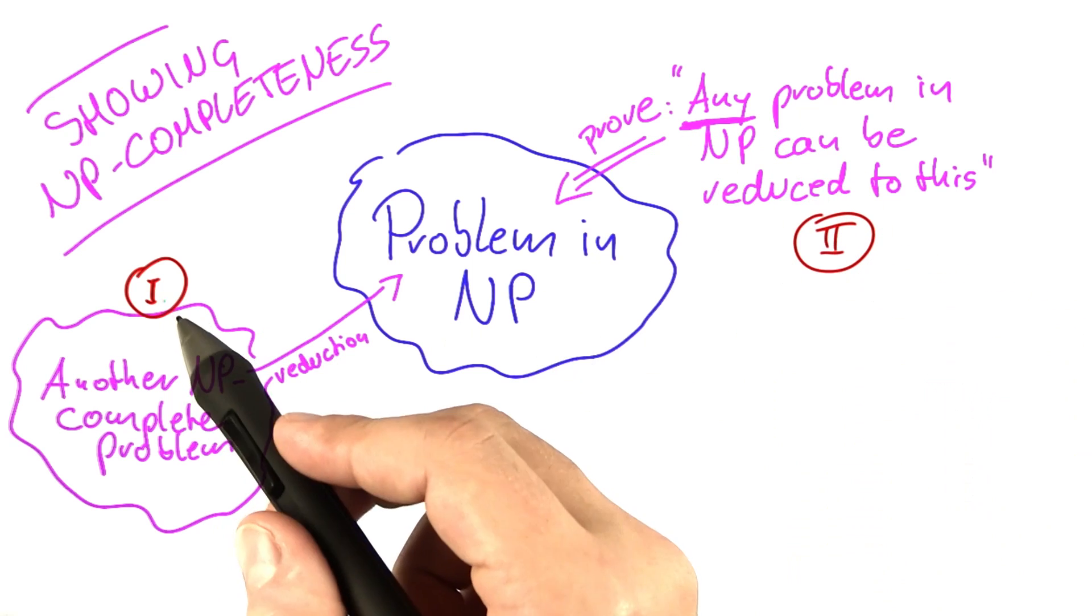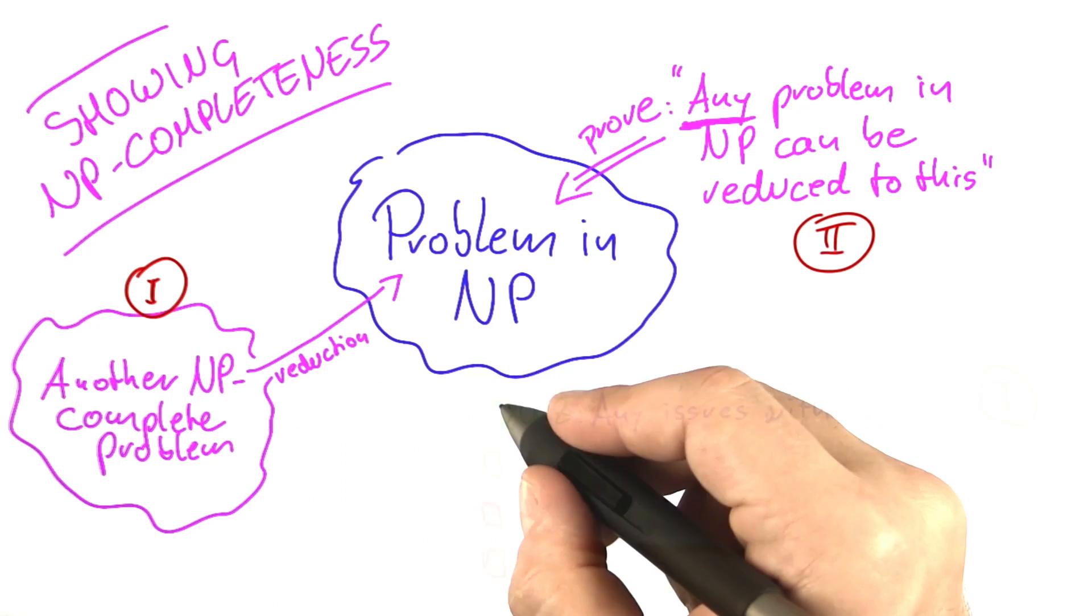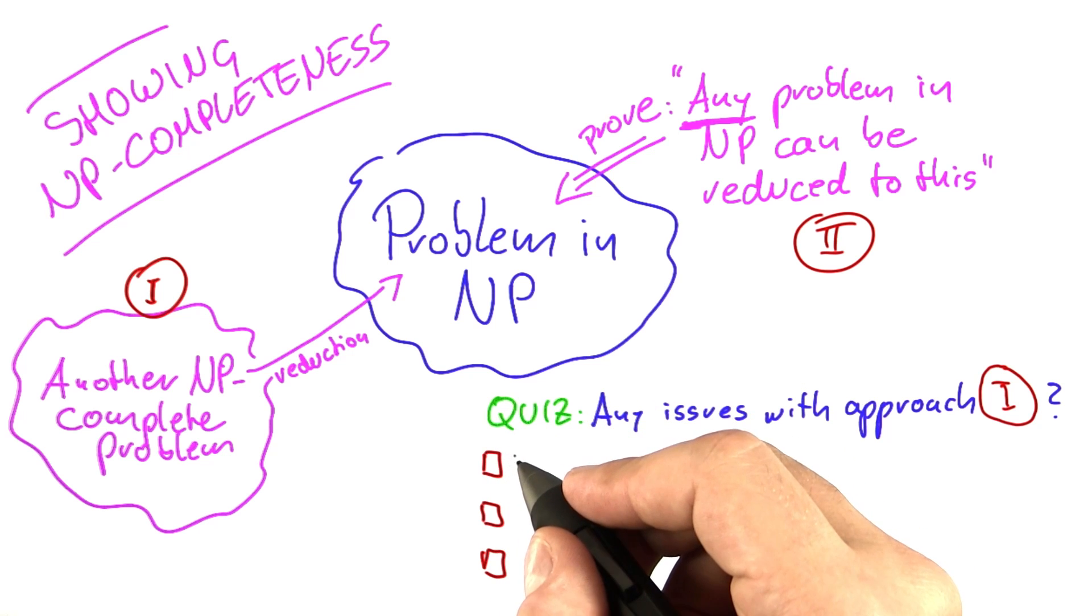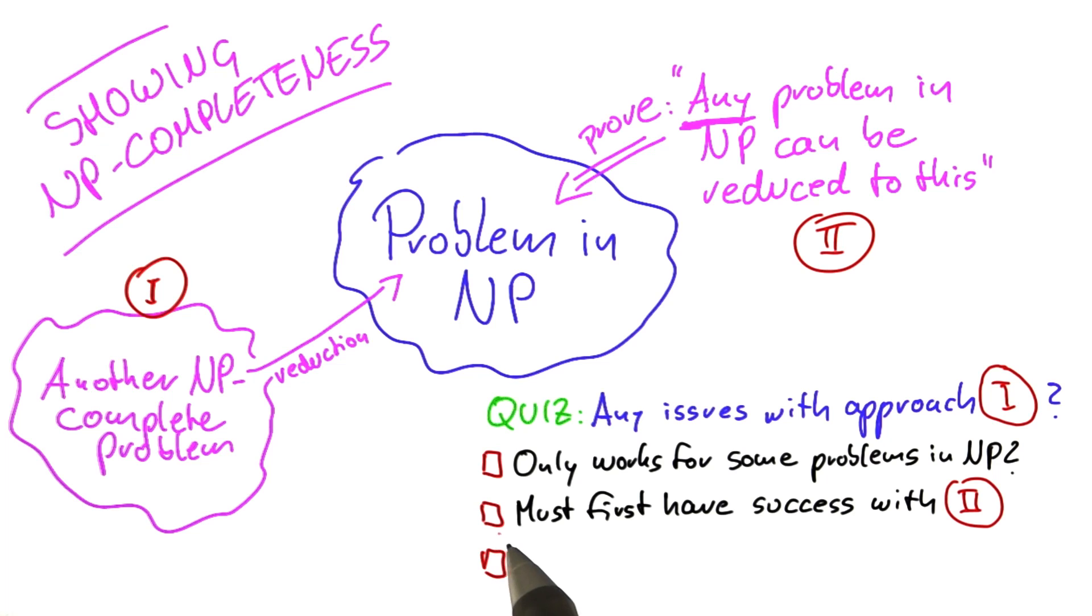But there's a little problem with the first approach here, and I hope you can tell me what that is. So what could be potential issues with approach number one? Could it be that this only works for some problems in NP? Could it be that before we can do approach number one, we must first have had success with approach number two for at least one problem in NP? Or could it be that approach number one is not always correct? Please check all of these statements which you believe are true.